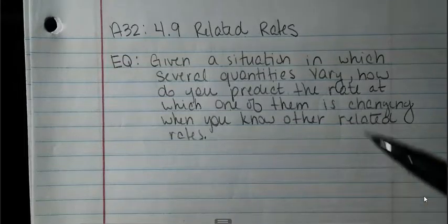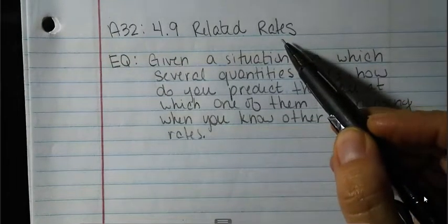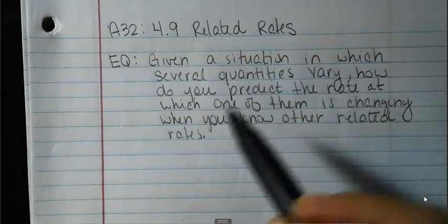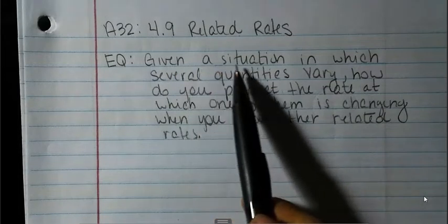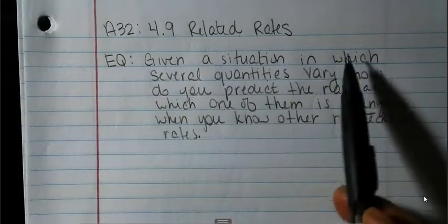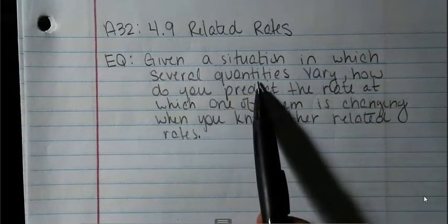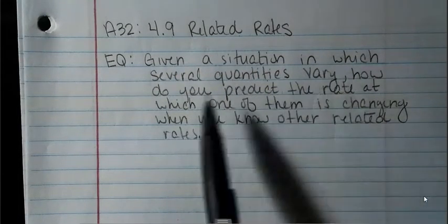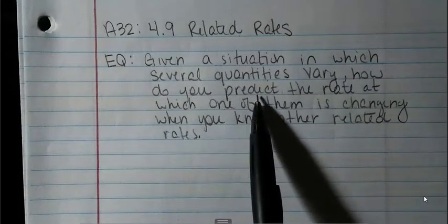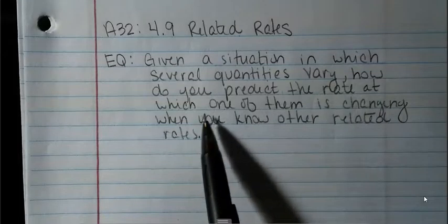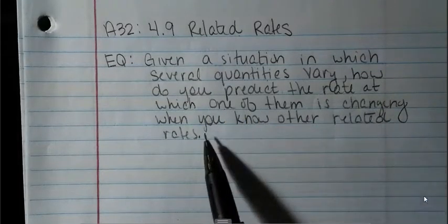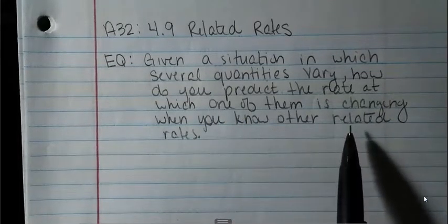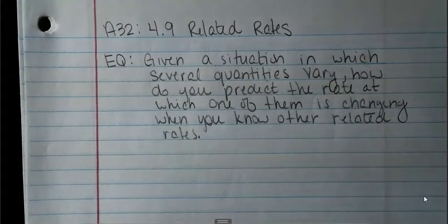Assignment 32, 4.9, Related Rates. Your essential question is: given a situation in which several quantities vary, how do you predict the rate at which one of them is changing when you know other related rates?